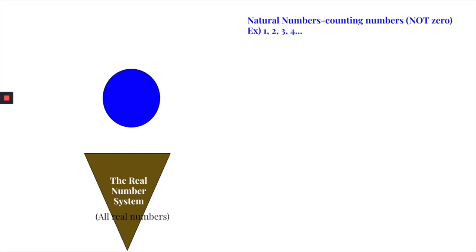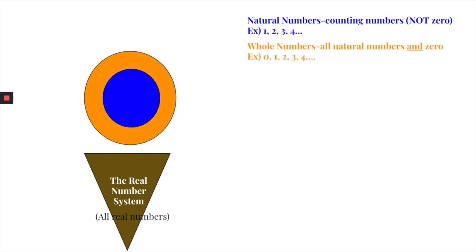So natural numbers are right there in the center of our cone. Then we grow just a little bit and add whole numbers. Whole numbers are all natural numbers and zero. Close your eyes and imagine a hole in the ground — most of you probably pictured a circular hole. So whole numbers include zero, that hole, plus your natural numbers one, two, three, four, and so on.